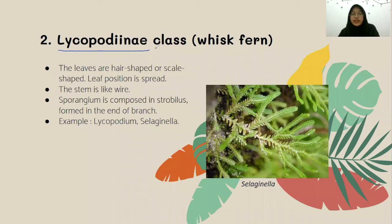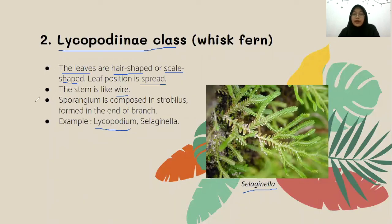The second is Lycopodinophyta, or whisk ferns. The leaves of these ferns are hair-shaped or scale-shaped, spread in position, and the stem is wire-like. Examples include Selaginella and Lycopodium. The sporangia are grouped in a strobilus formed at the end of branches. The sporophyte has a bright stem with many small leaves. Many lycopods are epiphytes, meaning they use other plants as a substrate but are not parasites.